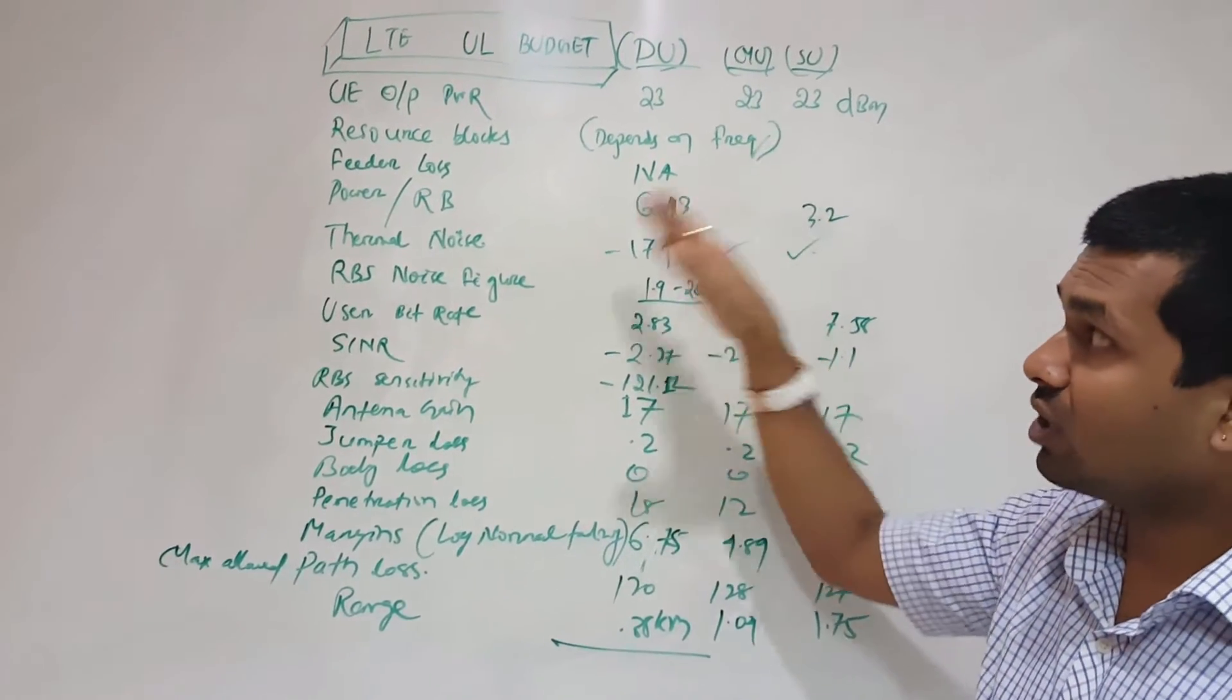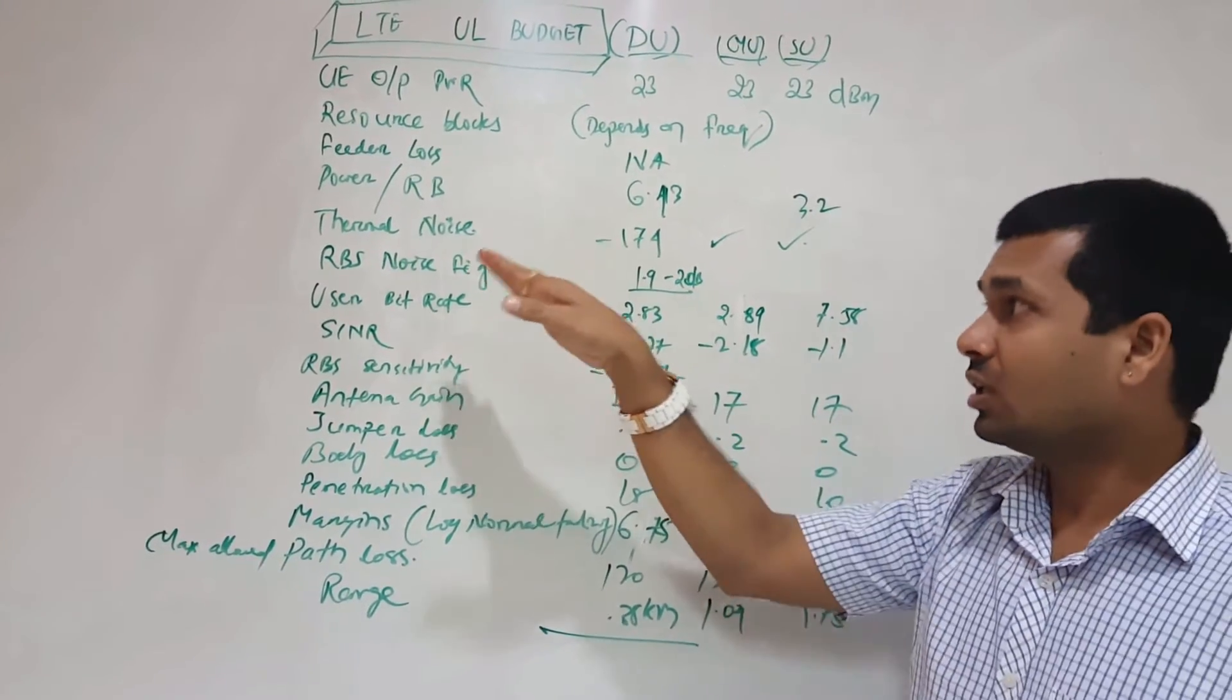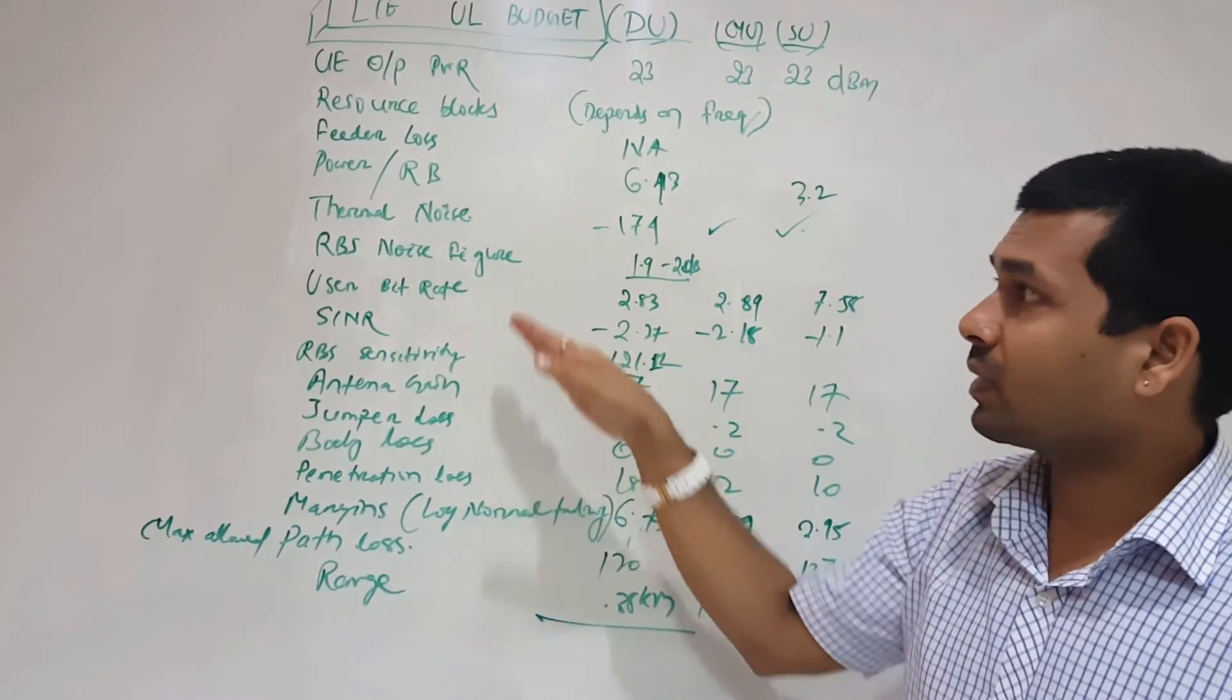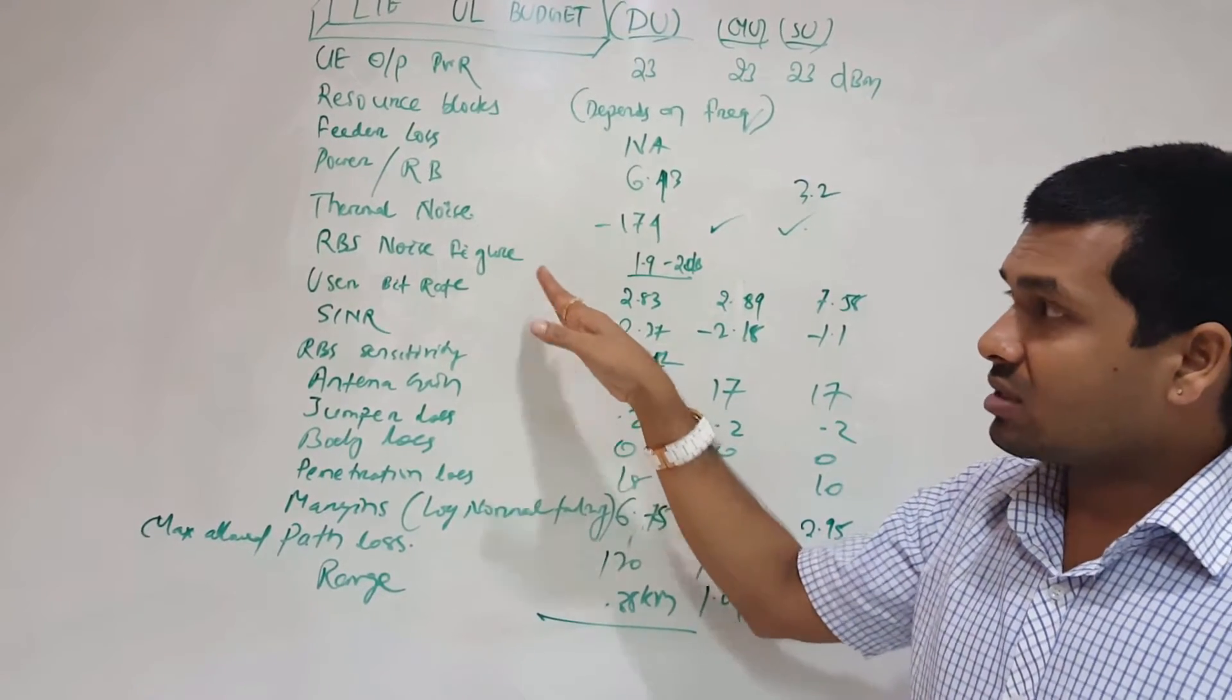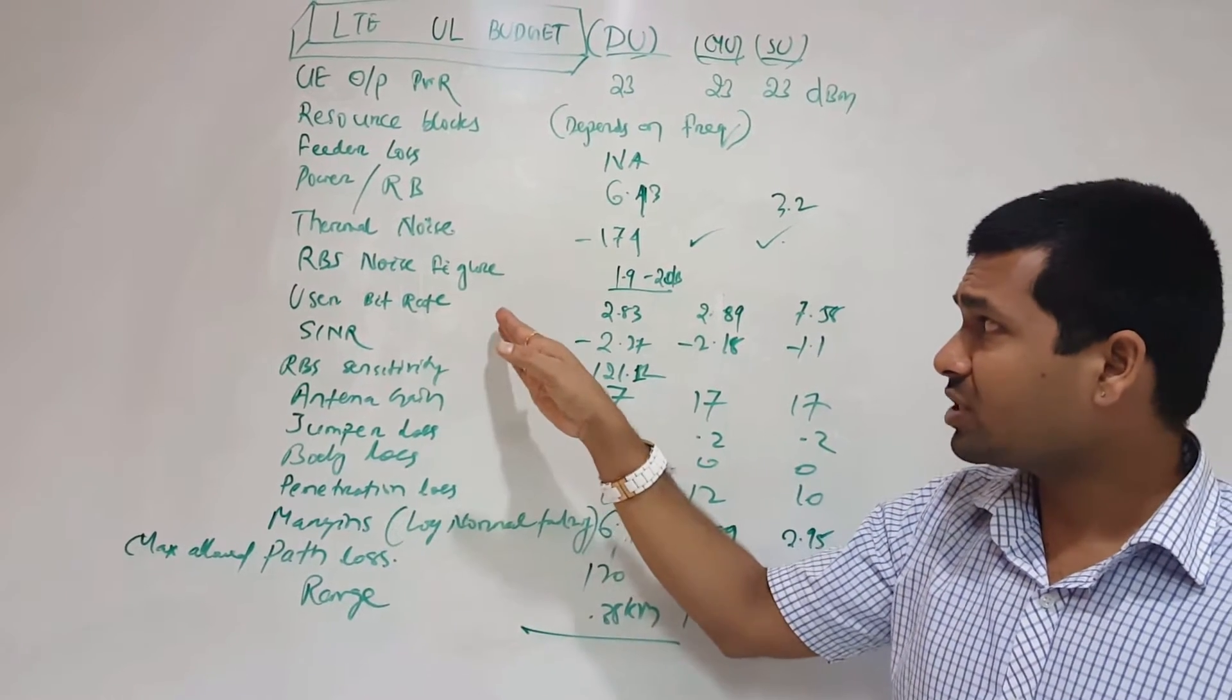Thermal noise minus 174 dBm per Hertz. RBS knowledge figure 1.9 to 2 dB. User bit rate 2.83 to 7.58 in the suburban. Then SINR should be above these targets.